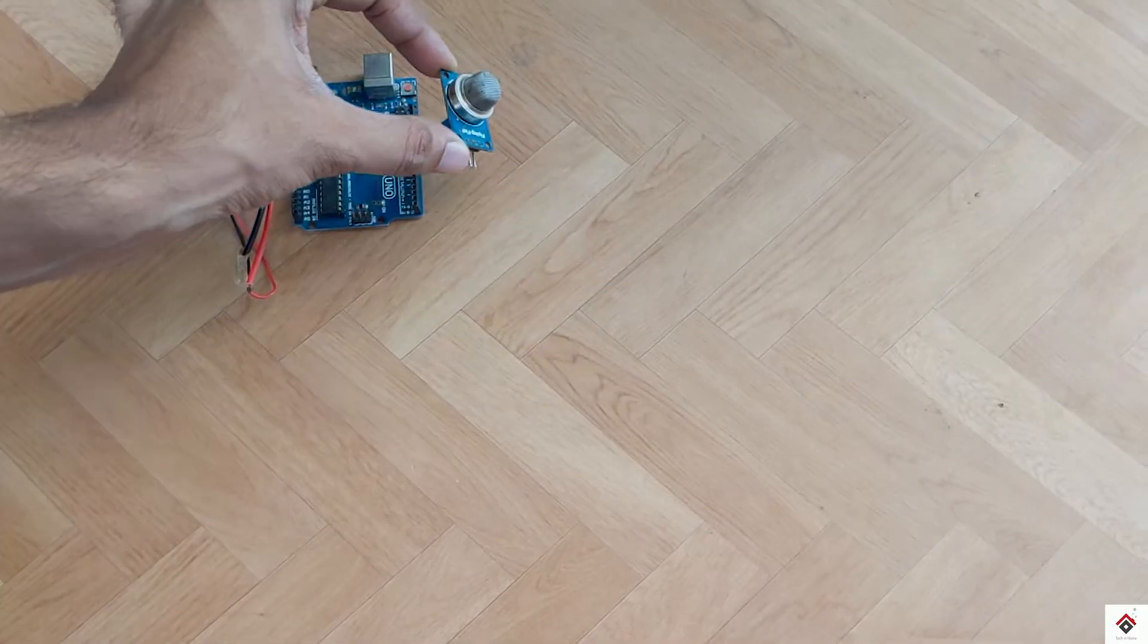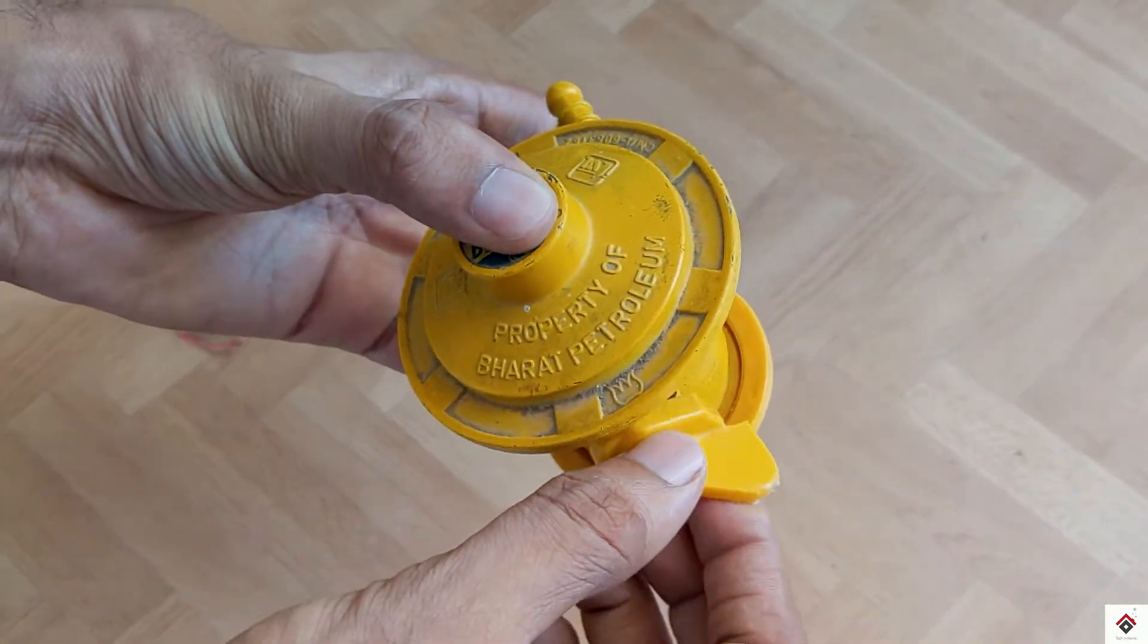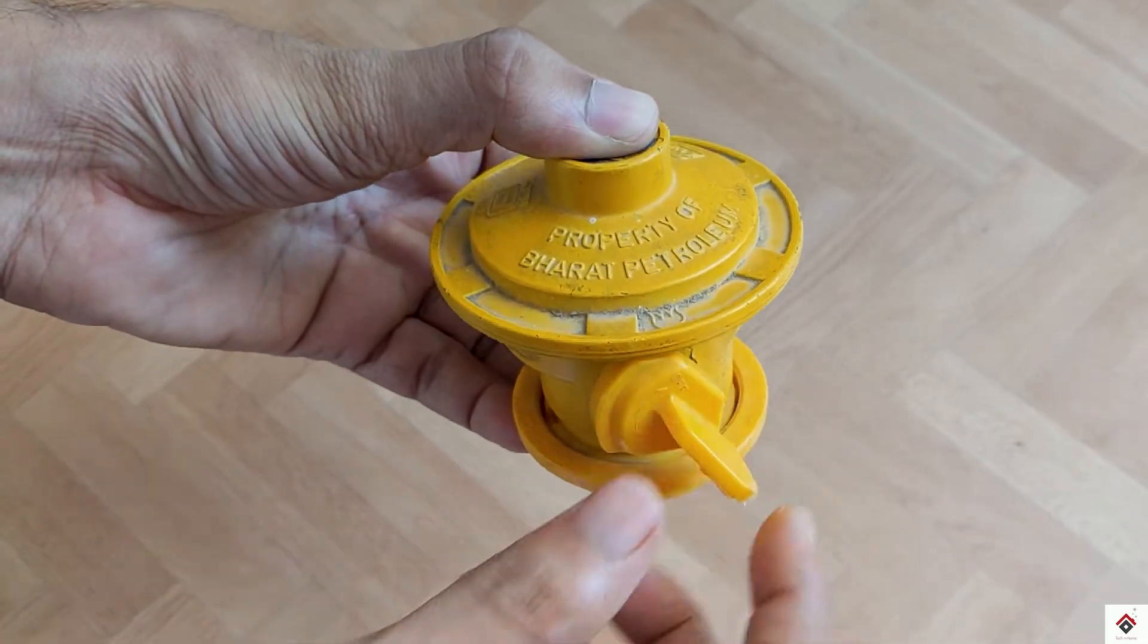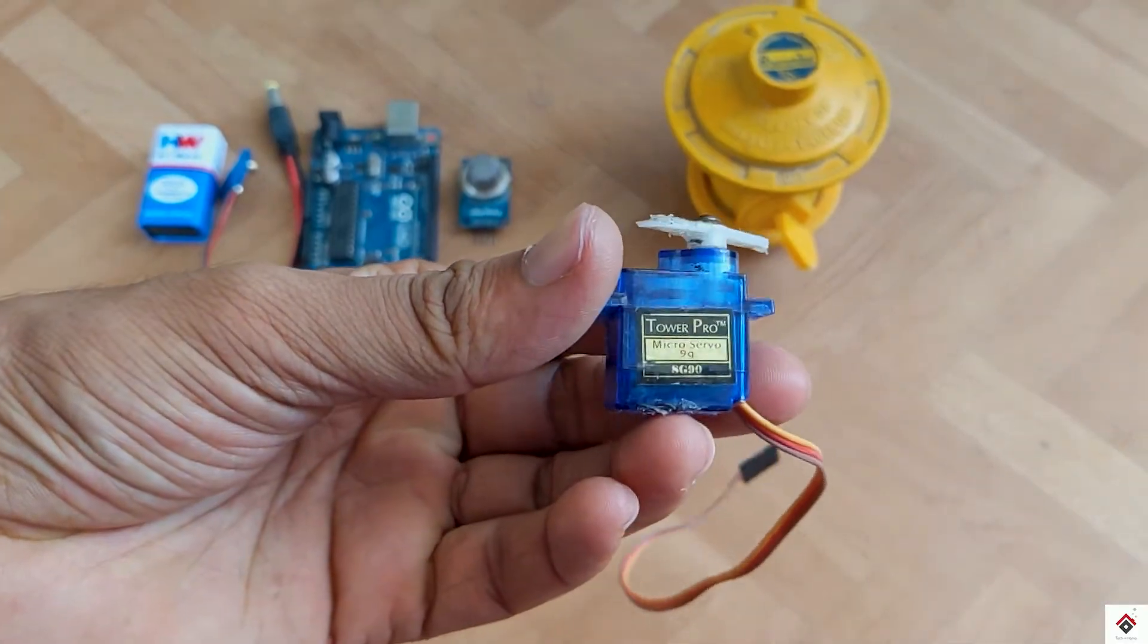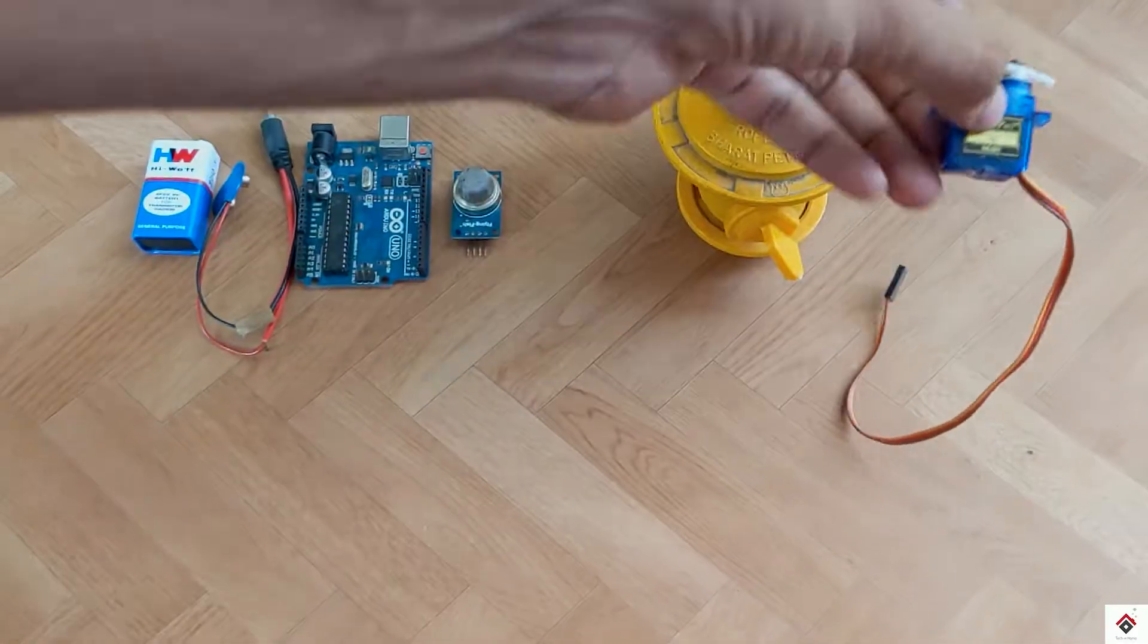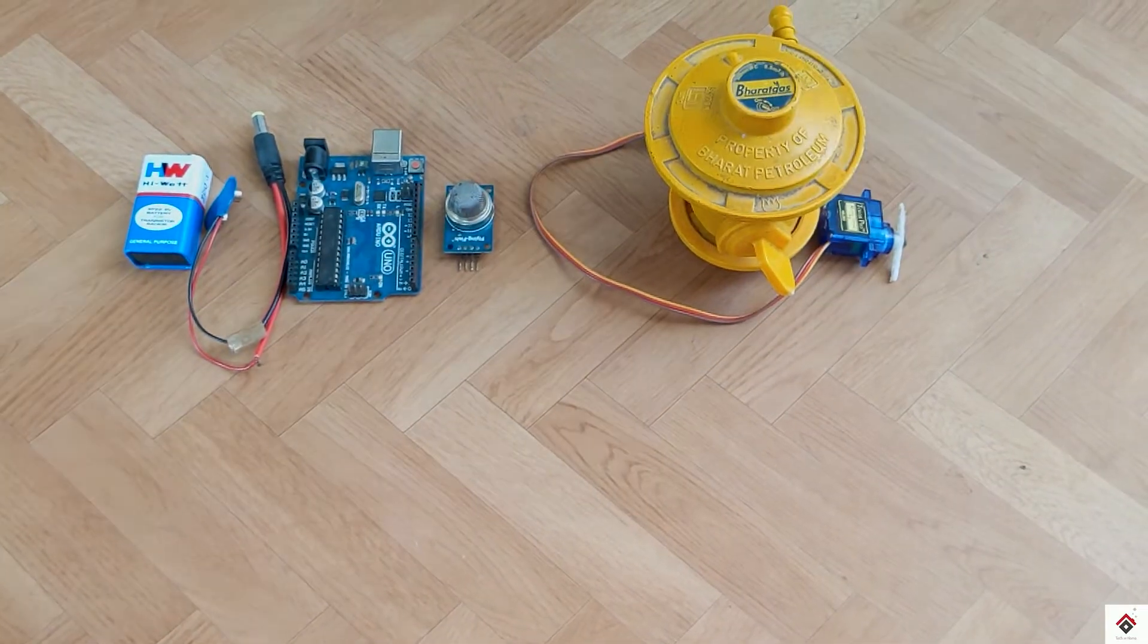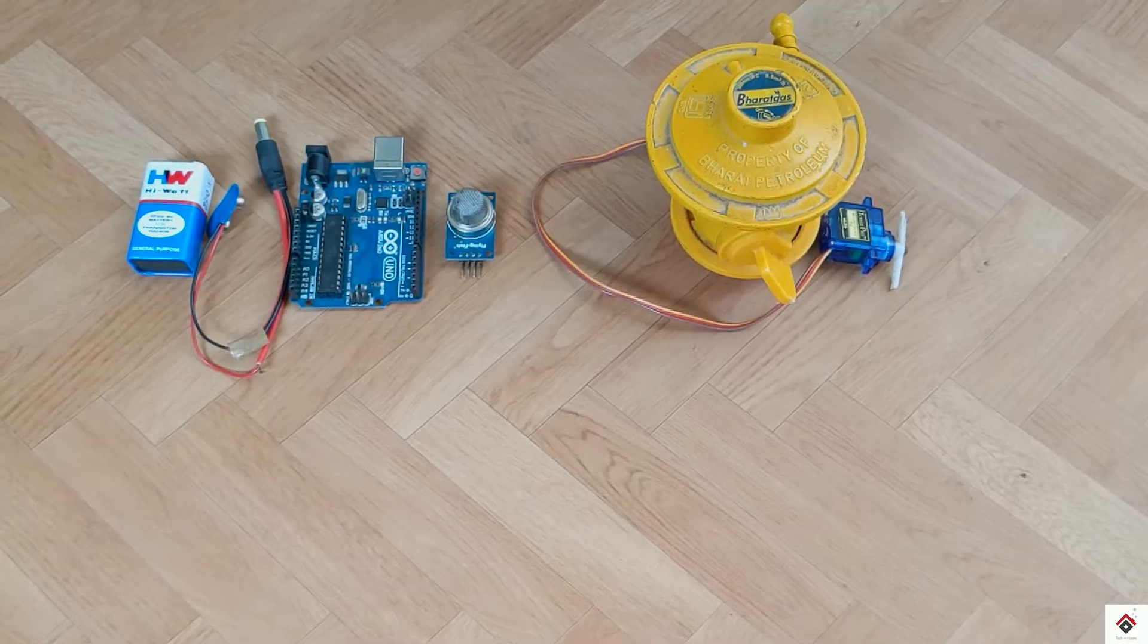For proper demonstration, I have also selected this gas regulator. Next, a servo motor. Here I have used SG90 servo motor with plastic gears, but I would suggest you to go with the bigger servo motor which comes with metallic gears.